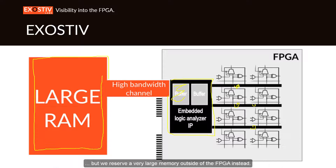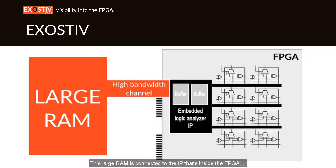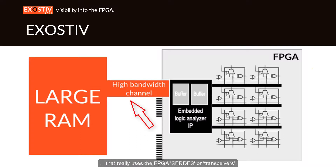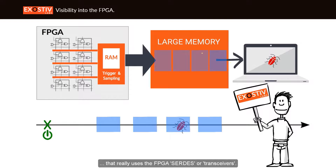Instead, we reserve a very large memory outside of the FPGA. This large RAM is connected to the IP inside the FPGA through a high-bandwidth channel that uses the FPGA SerDes or FPGA transceivers. That approach lets you explore a lot more than what you are used to seeing with a JTAG-based logic analyzer.